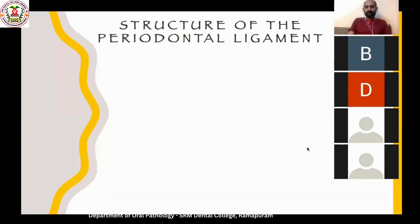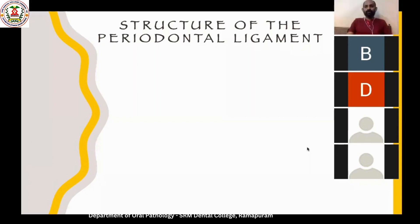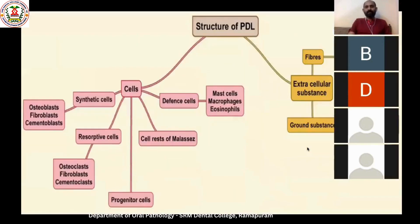What exactly would be the structure of the periodontal ligament? Up until now we were studying only hard tissue — bone, cementum, enamel, dentin — and now coming on to the periodontal ligament, what exactly would be its structure?